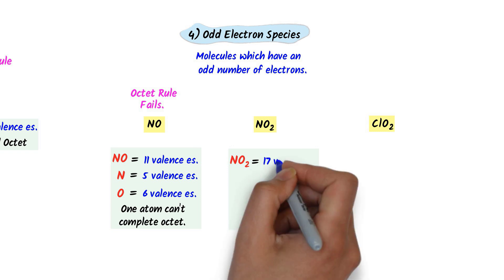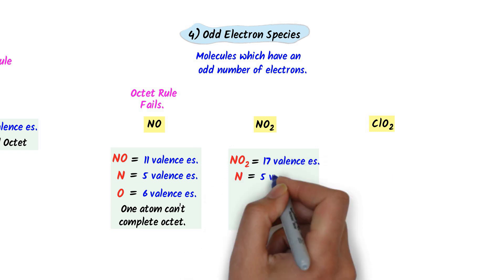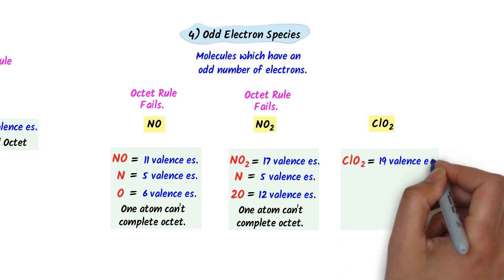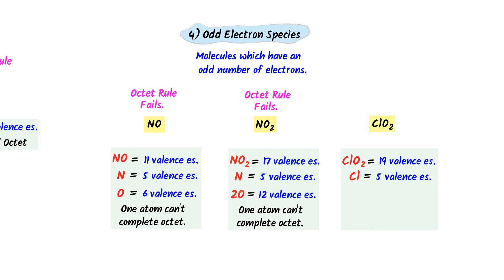In nitrogen dioxide (NO₂) there are 17 electrons total: 5 from nitrogen and 12 from two oxygen atoms. These 17 electrons mean one atom cannot complete its octet. In chlorine dioxide (ClO₂) there are 19 electrons total: 7 from chlorine and 12 from two oxygen atoms. Again, one atom cannot complete its octet. Therefore, the octet rule has limitations in explaining the stability of these odd-electron molecules.